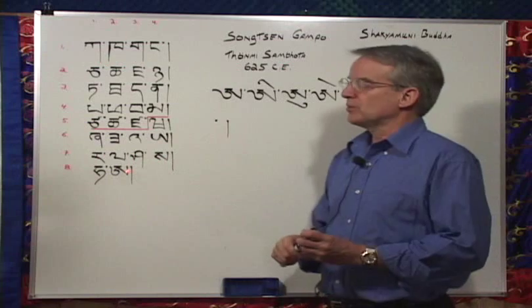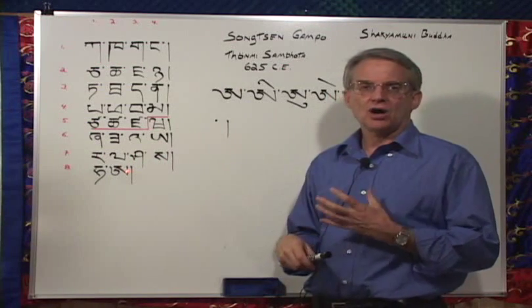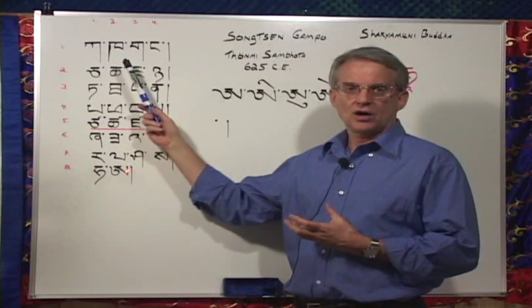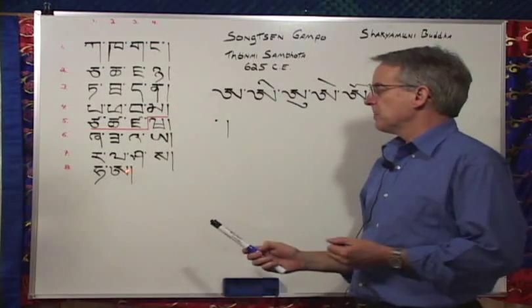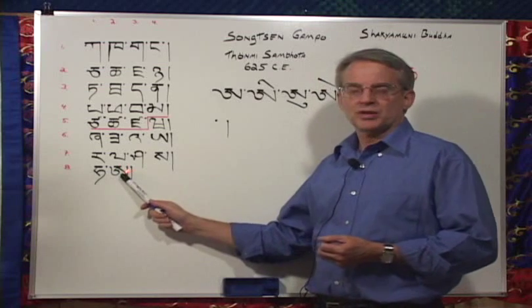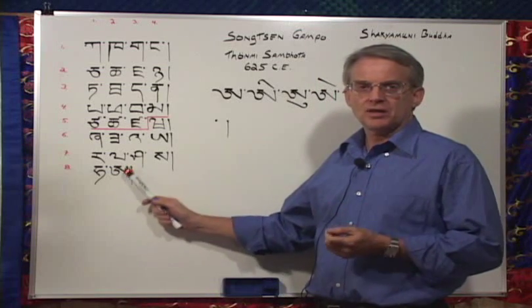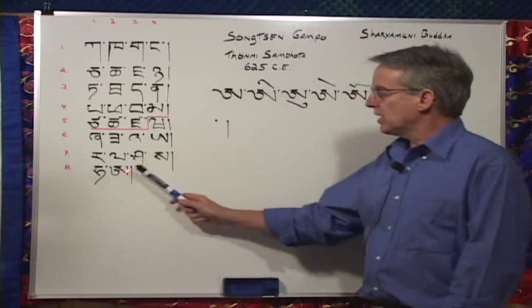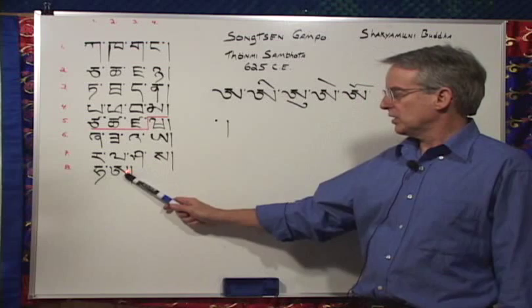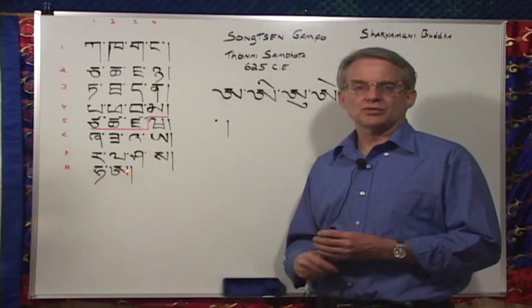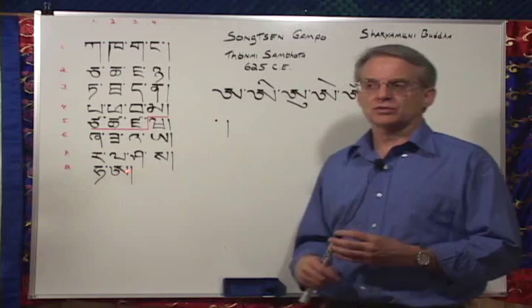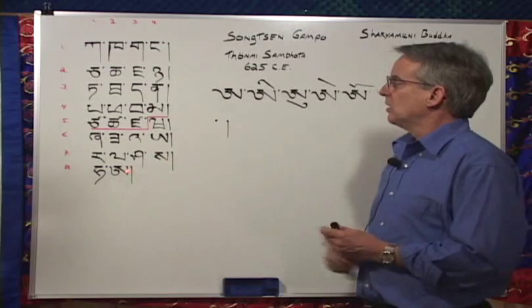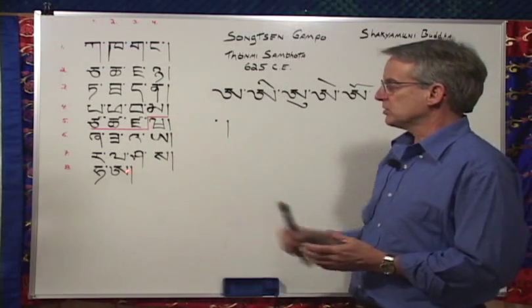Each of the 30 consonants has the vowel sound 'ah' within it. We call it the inherent ah, or the inherent vowel sound. The last letter of the alphabet is a high-toned ah, and the third letter in the sixth row is a low-toned ah. The high-toned ah is regarded as the universal sound, the mother of all sound, the perfection of wisdom in one sound. And that is the ah that's found in all of the 30 consonants.